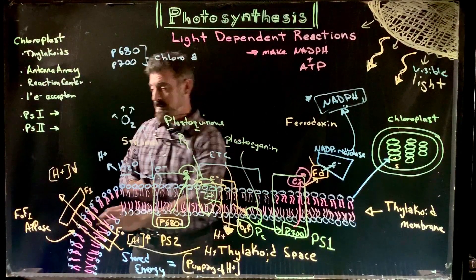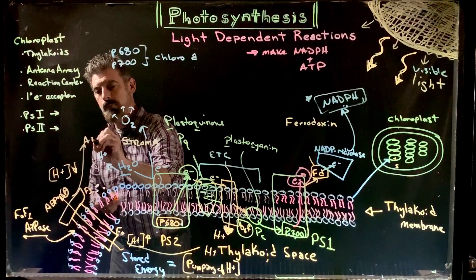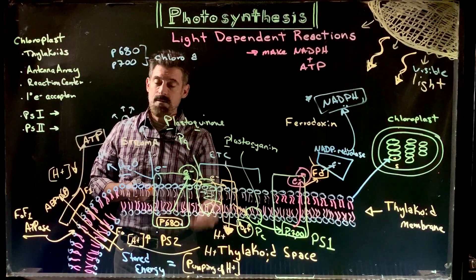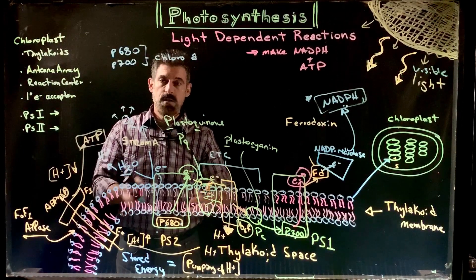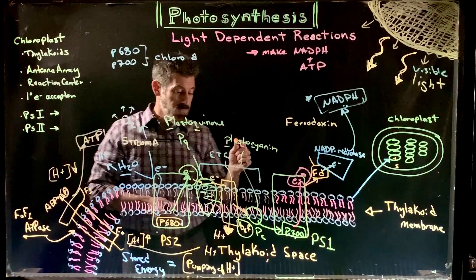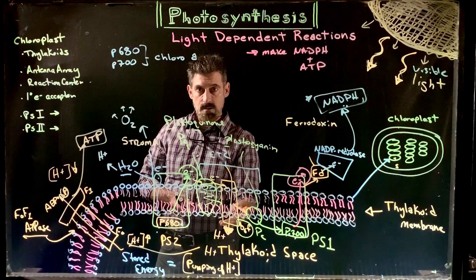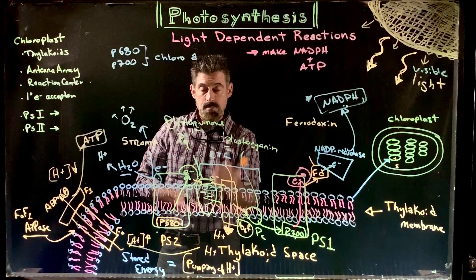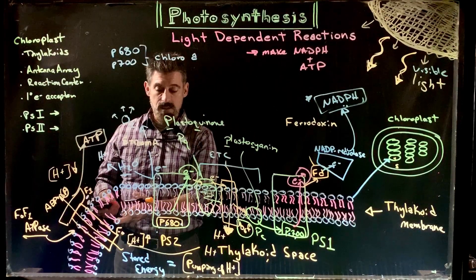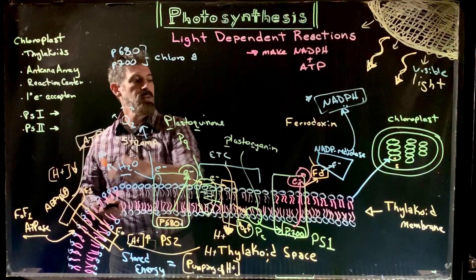As hydrogen ions diffuse out through the FoF1 ATPase, the F1 protein — an enzyme — takes ADP and free phosphates and makes ATP. So ATP is made using the energy of diffusion of hydrogen ions. This is the same process that happens in the mitochondria. Both mitochondria and chloroplasts have electron transport chains, active transport pumps that pump protons, and FoF1 ATPases that use diffusion to make ATP — very similar mechanisms in both organelles.